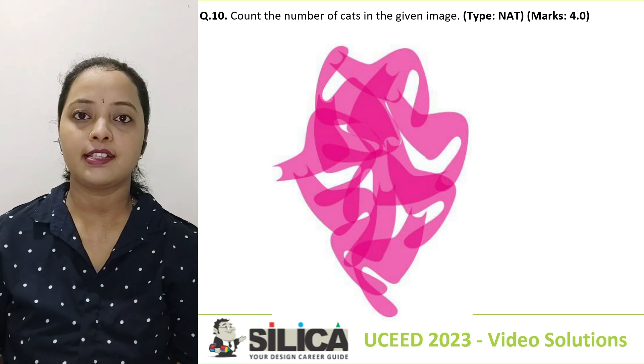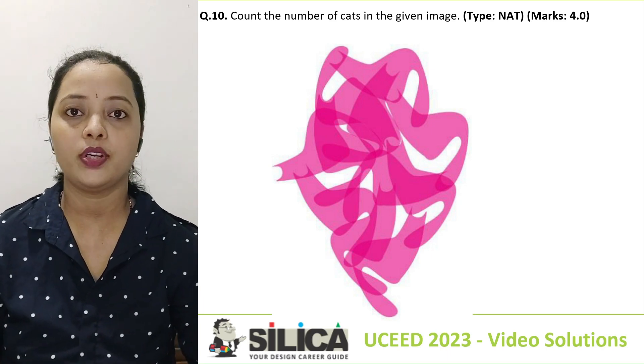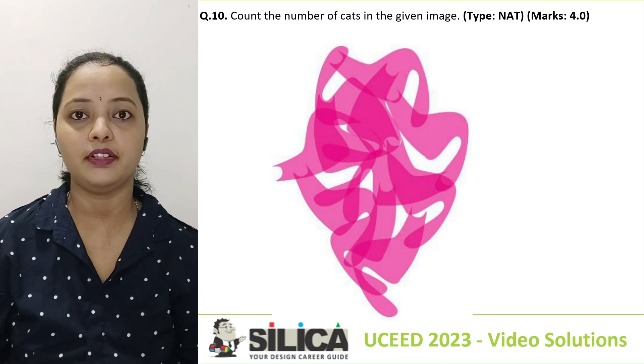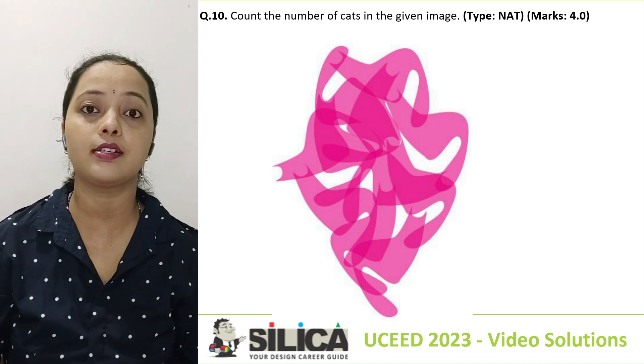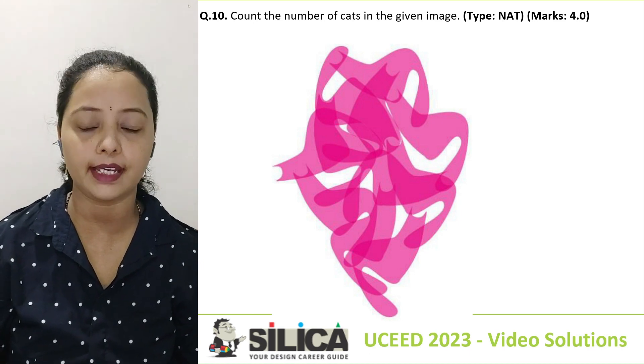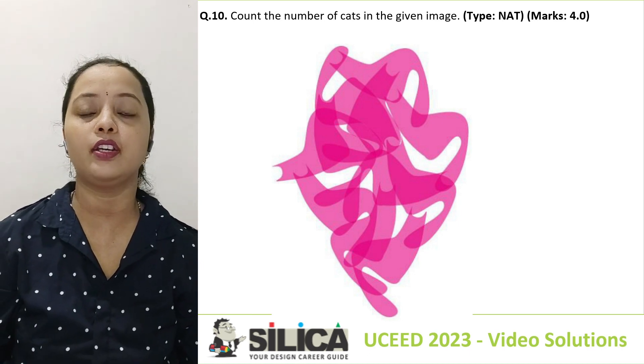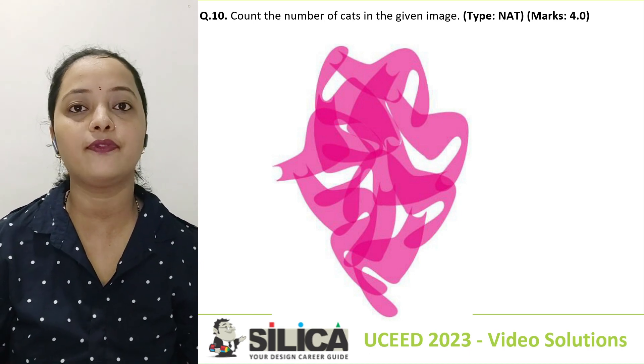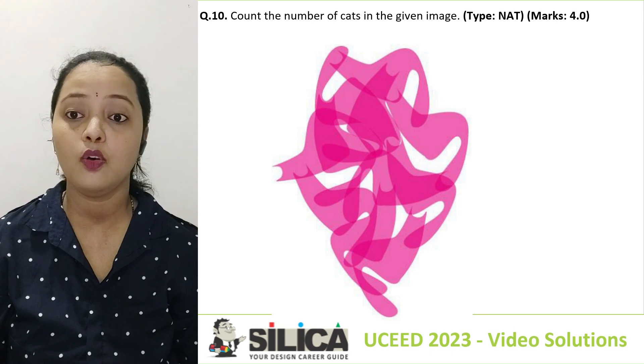Hello everyone, we're discussing questions of UC 2023 papers. This is question number 9, an MET question, so there's no negative marking — it's a four mark question.